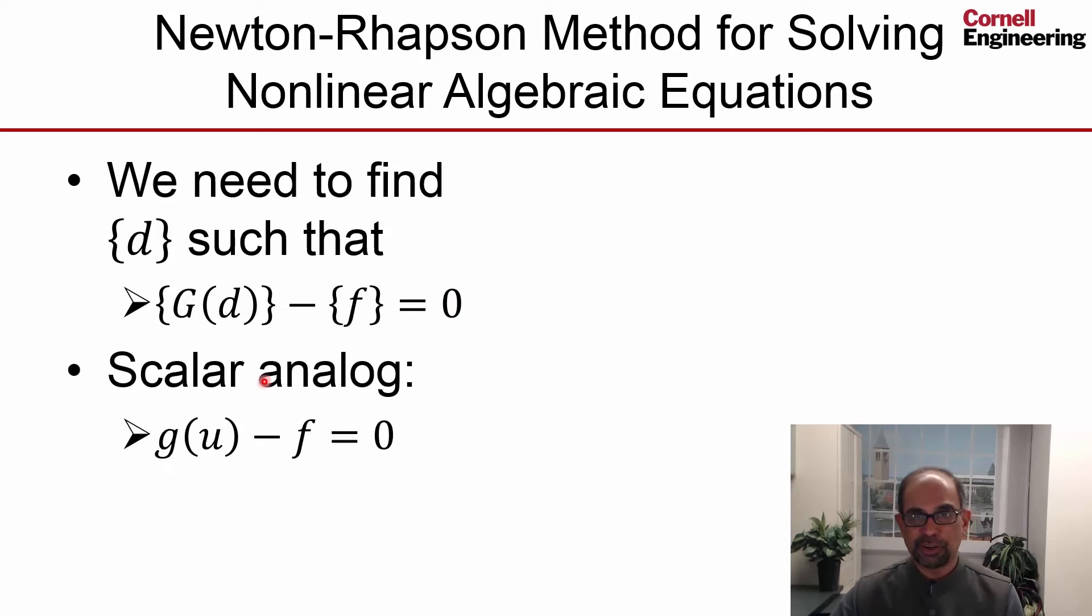And the scalar analog, this is easier to think of in a scalar analog. So, let's say you have one non-linear equation, and we write it as in this form. And to make this more concrete, let's say it's u cubed minus 20 is equal to 0. So, g of u is u cubed. So that's a non-linear algebraic equation.